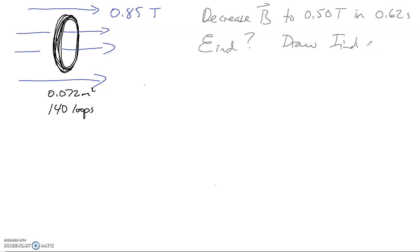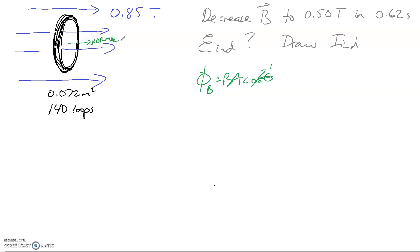Let's start with the induced EMF and flux calculations. We're going to find our initial magnetic flux using BA cosθ. The angle between the normal and the field is 0 degrees, so cosθ equals 1 — that's maximum flux. So if we do B times A, we've got 0.85 times 0.072, giving us about 0.0612 Webers of flux.